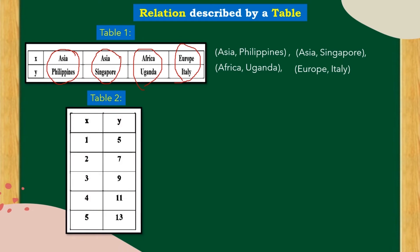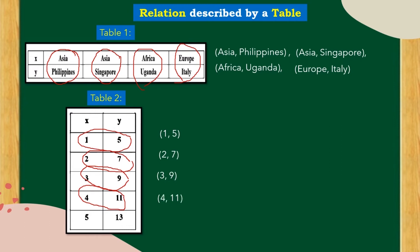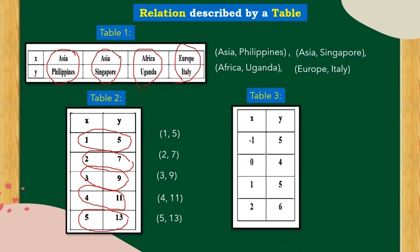Table number 2 has x and y coordinates giving the pairs: (1, 5), (2, 7), (3, 9), (4, 11), and (5, 13). Table number 3 consists of x and y coordinates with pairs: (negative 1, 5), (0, 4), (1, 5), and (2, 6).